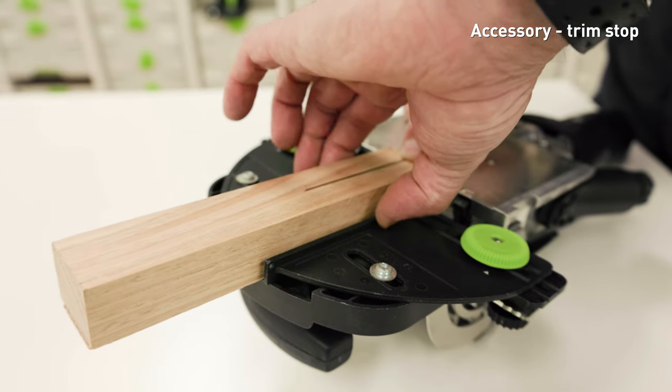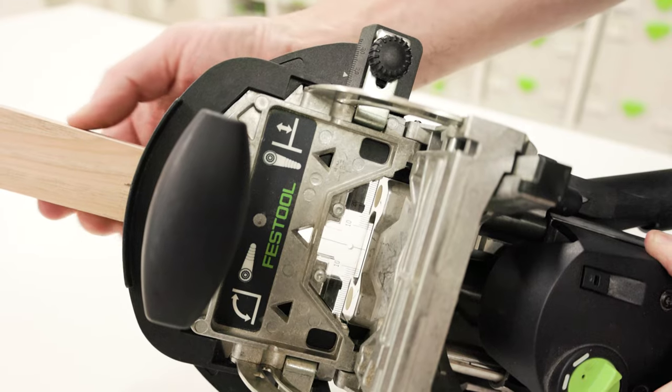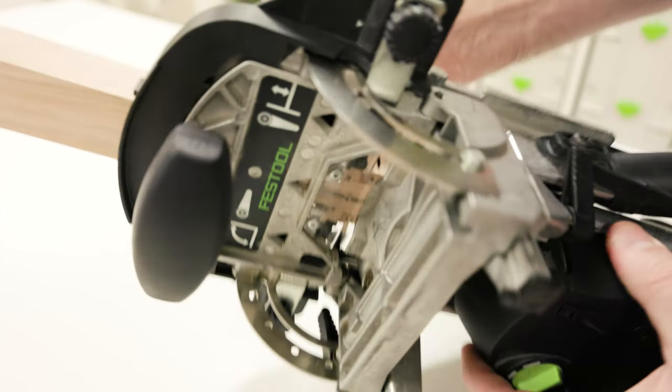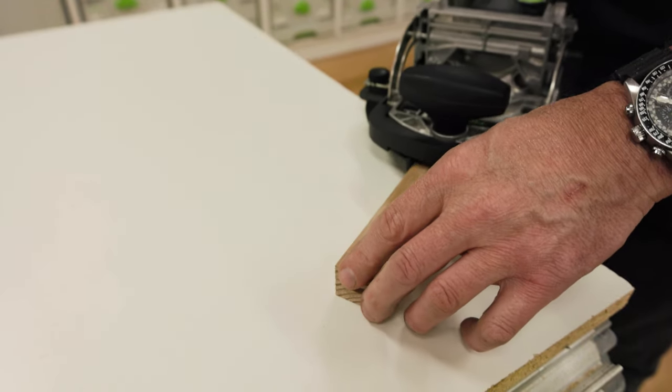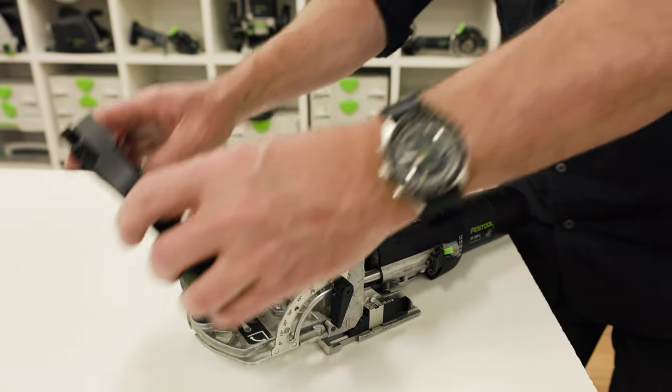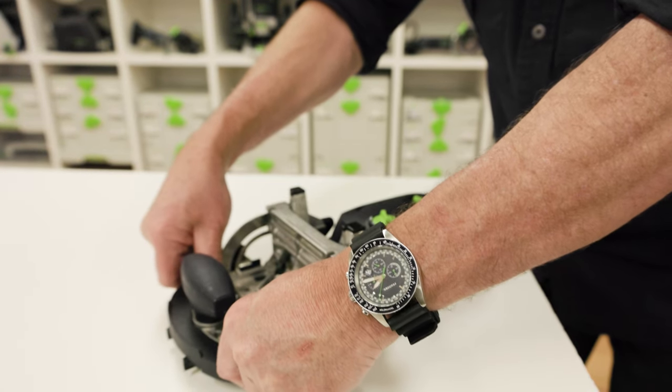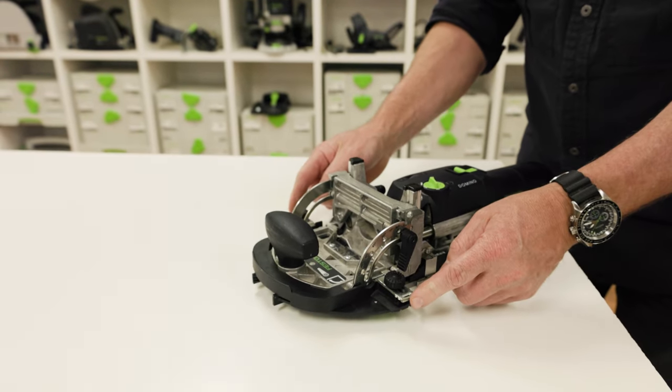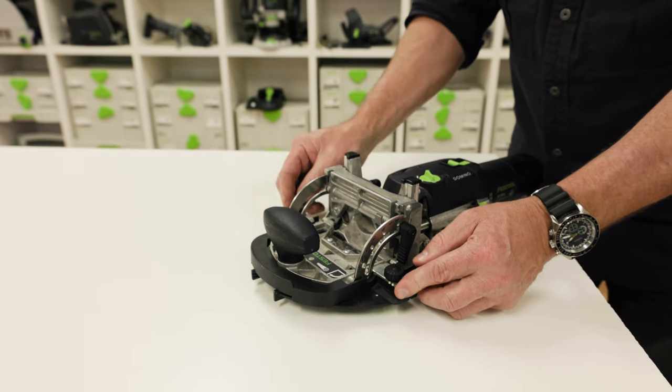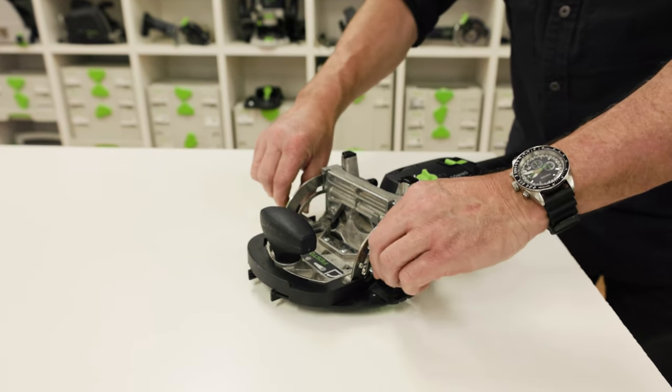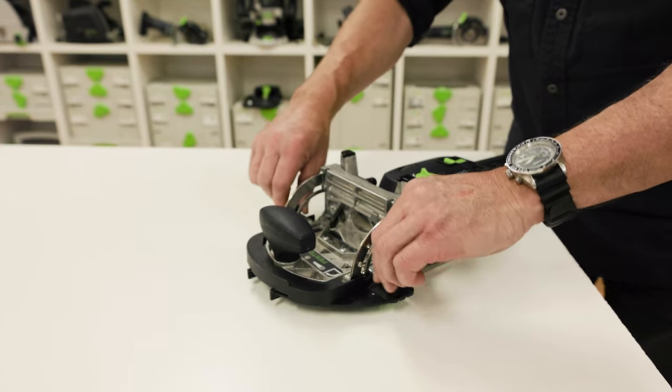The optional trim stop is used to securely hold small workpieces for cutting mortises and gives the benefit of repeatability when working with thinner materials. With the fence sitting flat, slide the trim stop over the fence of the domino joiner. Make sure the trim stop is fully seated under the domino's fence. Slide the two locking latches inward. Tighten the two thumb screws.